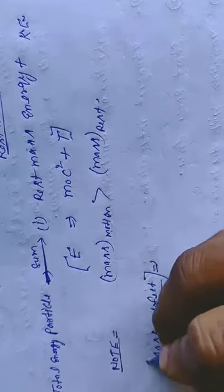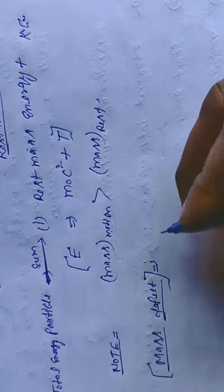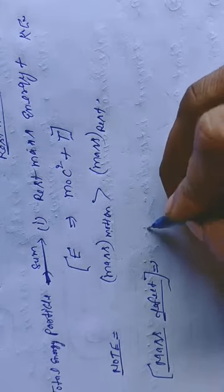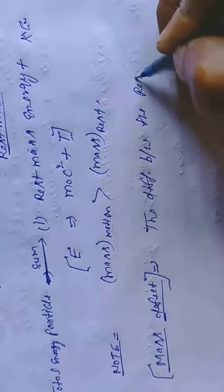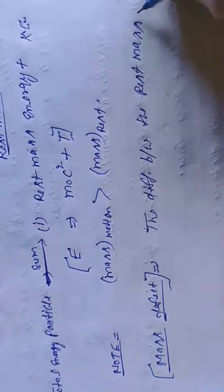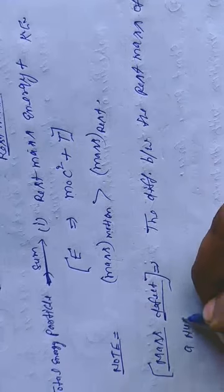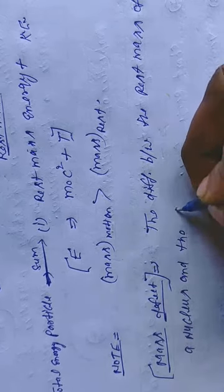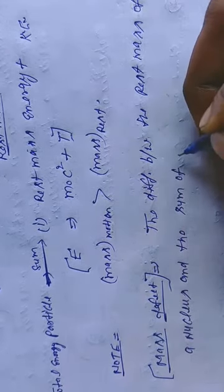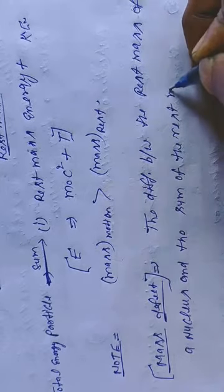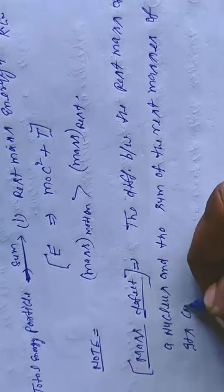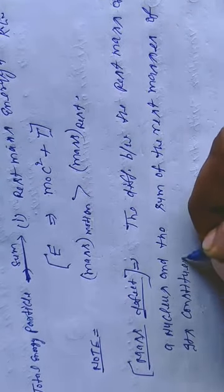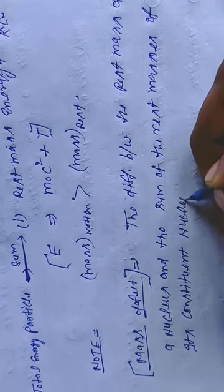Mass defect: the difference between the rest mass of a nucleus and the sum of the rest masses of its constituent nucleons.